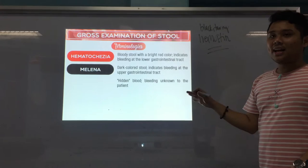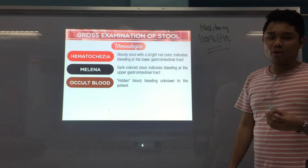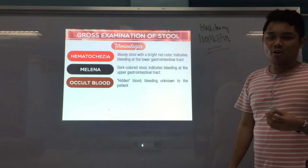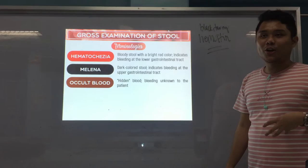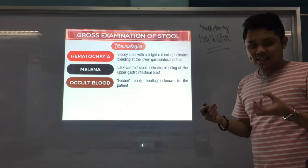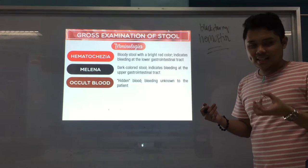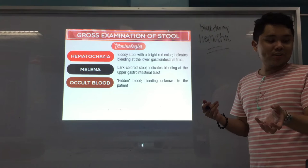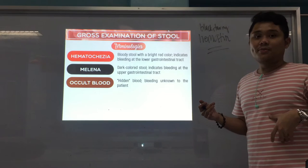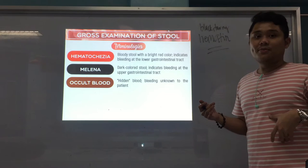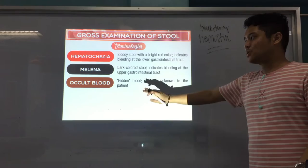Next, we have hidden blood — it's bleeding unknown to the patient. That is known as occult blood. Occult means hidden. The patient doesn't know that there is bleeding happening inside his or her digestive tract. But once you test it in the laboratory, you see there is blood in the stool. The color of the stool is normal brown, but inside there are little amounts of blood — and that indicates occult blood.